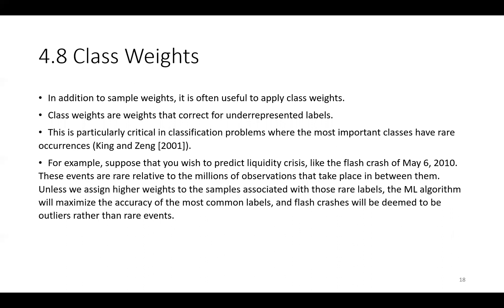For example, suppose that you wish to predict liquidity crisis, like the flash crash of May 6th of 2010. These events are rare relative to the millions of observations that take place in between them. Unless we assign higher weights to the samples associated with those rare labels, the machine learning algorithm will maximize the accuracy of the most common labels. And flash crashes will be deemed to be outliers rather than rare events.